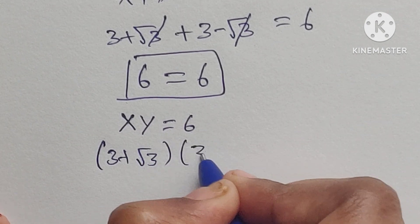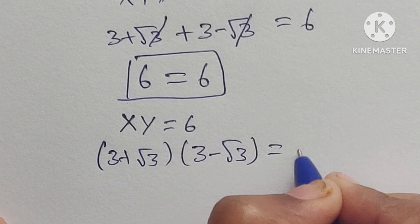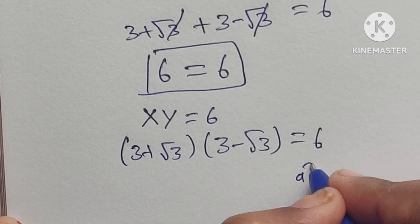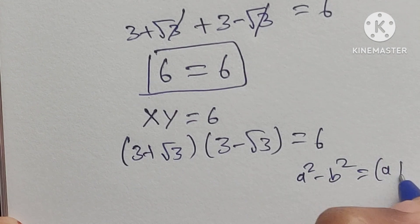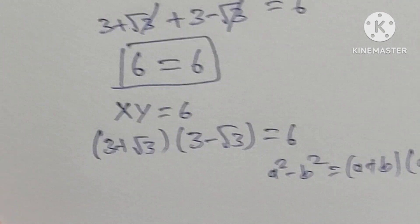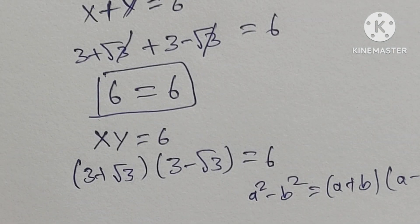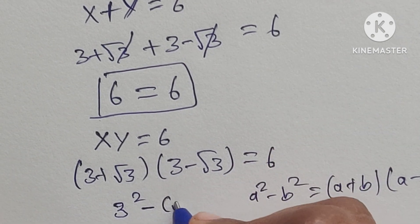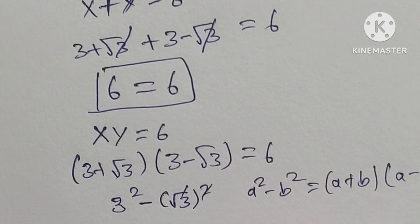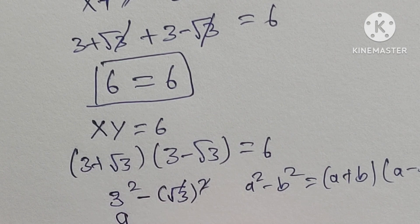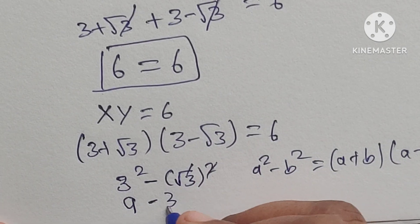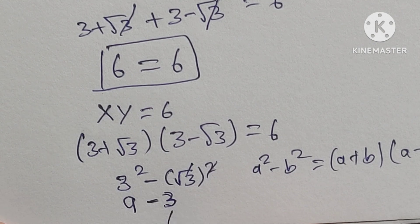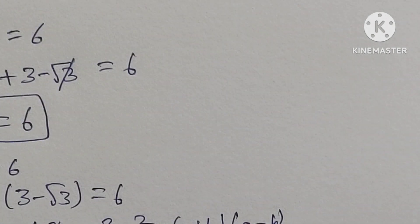Now checking equation 2: (3 plus square root of 3) times (3 minus square root of 3) equals 6. This is in the form (a plus b)(a minus b) equals a squared minus b squared. So we get 3 squared minus (square root of 3) squared, which is 9 minus 3, equals 6. So 6 equals 6. This is also true.